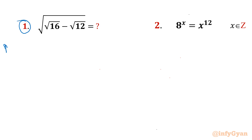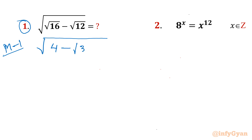Let me begin with method number 1 for problem number 1. I will write root 16, which we all know is 4. Root 12 — we can think of it as root of 3 times 4, and if we want to take the 4 out, root 4 is 2. So I can write 4 minus 2 times square root of 3.